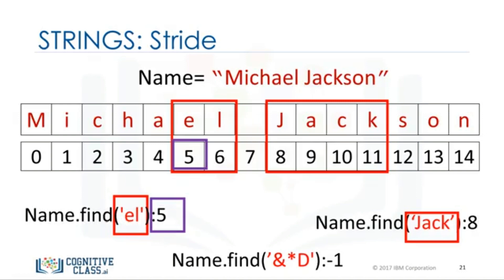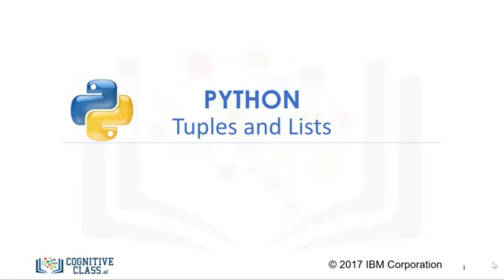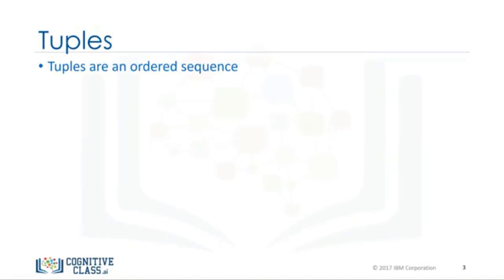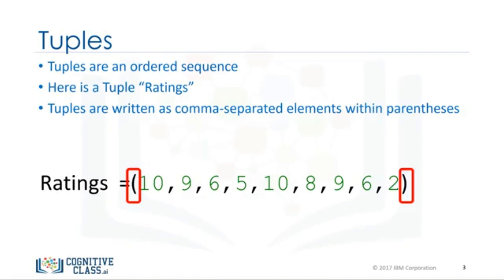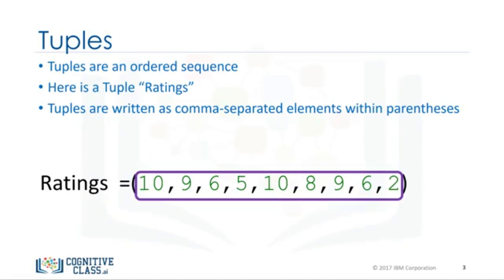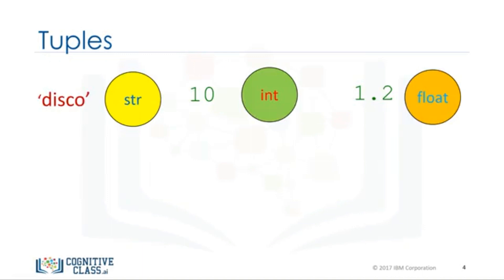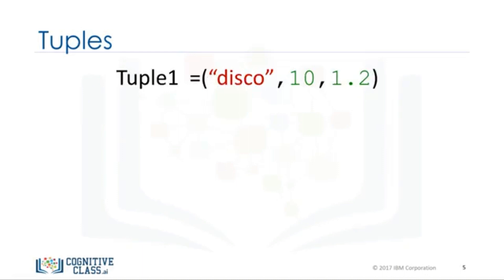In this video, we will cover lists and tuples. These are called compound data types and are one of the key types of data structures in Python. Tuples are an ordered sequence. Here is the tuple ratings. Tuples are expressed as comma-separated elements within parentheses. In Python, there are different types — strings, integers, floats — they can all be contained in a tuple, but the type of the variable is tuple. Each element of a tuple can be accessed via an index.